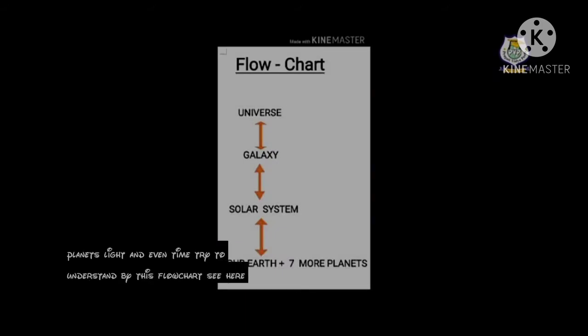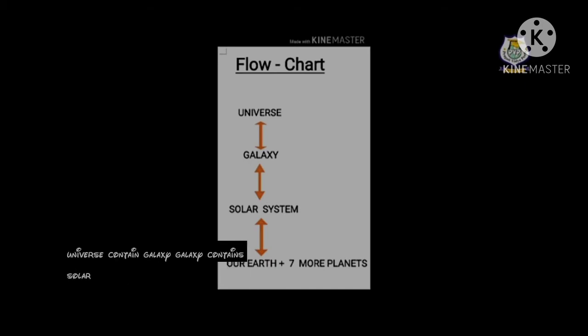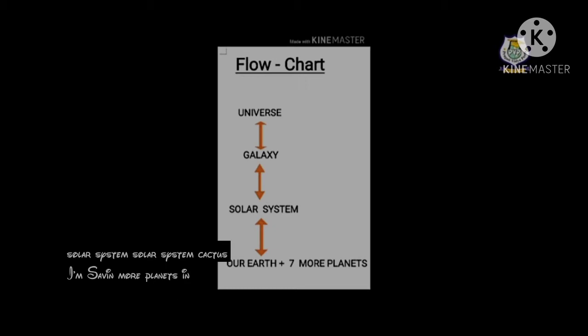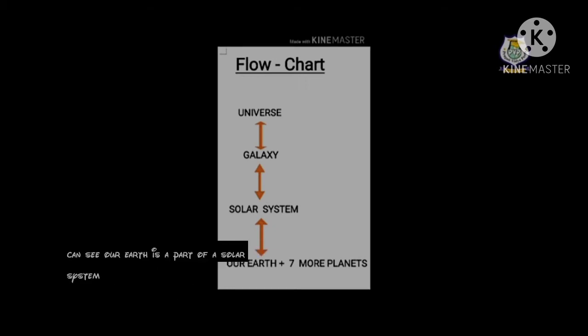Try to understand by this flowchart what you are observing. The universe contains galaxies; a galaxy contains solar systems; a solar system contains eight planets. In another way, our earth is part of a solar system, the solar system is part of a galaxy, and the galaxy is part of the universe.